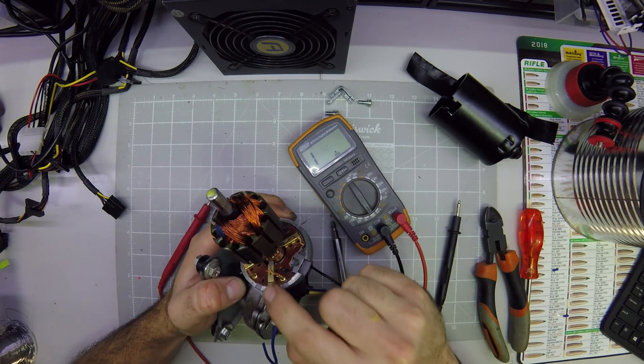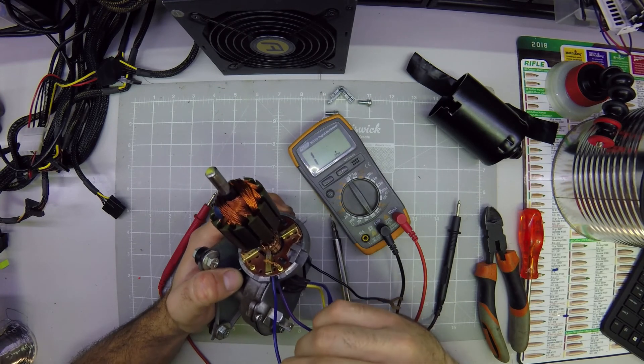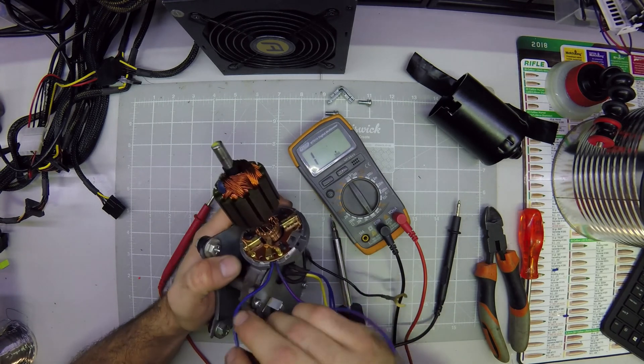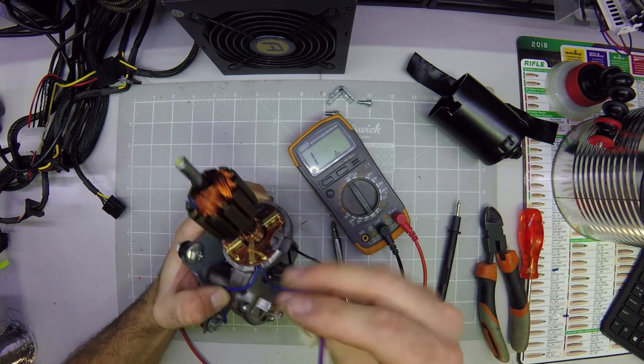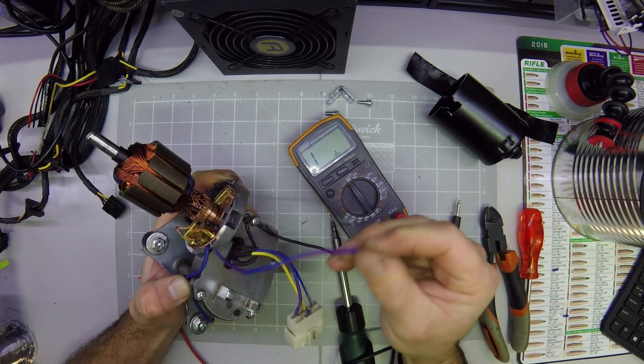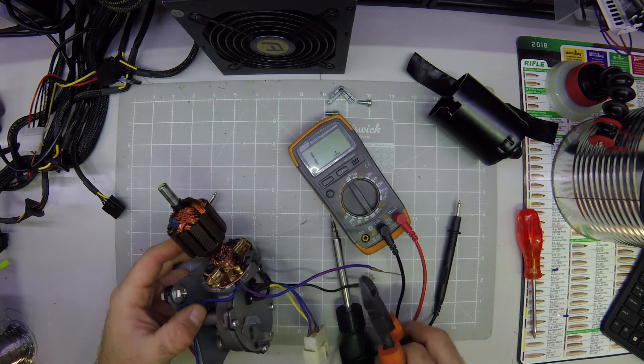So this is the one we're going to use. This one we're going to disregard. We're not going to use that brush. So this one we're not going to use. We'll put it aside. This is our positive. It's got a nice red line. We'll remember that one. I'm going to go ahead and strip this one.